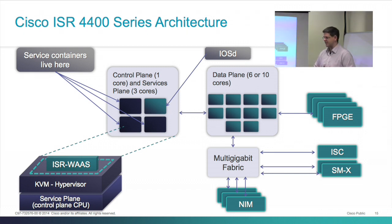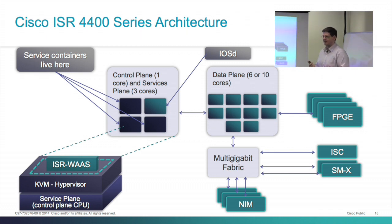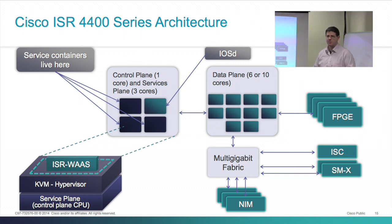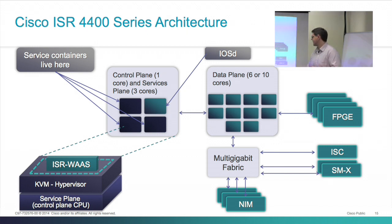The 4400 series uses two physically separate heat sinks because it has a physically separate data plane and a physically separate control plane. The control plane is a four-core x86 CPU; we only need one core to run control plane protocols and IOS, leaving three cores for Linux virtual machines — KVM or LXC containers. The first VM available today is Woz, which we call ISR Woz. It's the exact same software as Woz running on a virtual machine or on an appliance, just running inside the router itself.